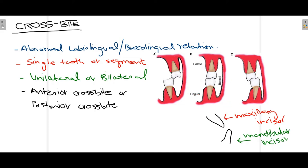When we talk about crossbite, this normal relation is not present. You can see the mandibular molar is now present ahead of the maxillary molar. The maxillary molar's buccal cusp is occluding in the mandibular fossa of the lower molar, instead of the palatal cusp which should occlude in the mandibular molar central fossa. The relation is reversed — this is known as crossbite.